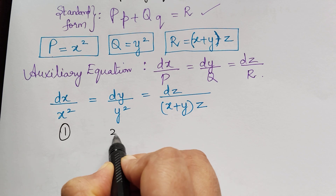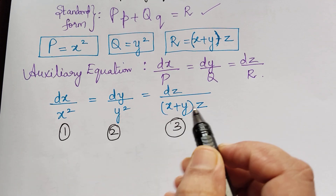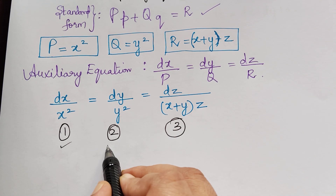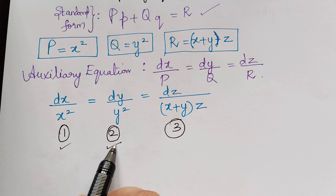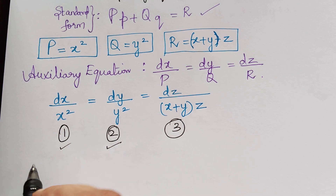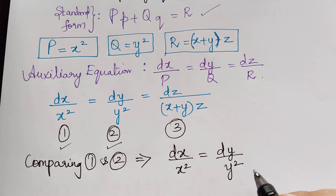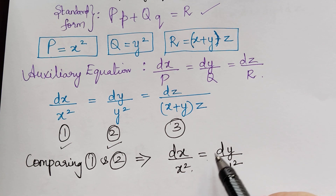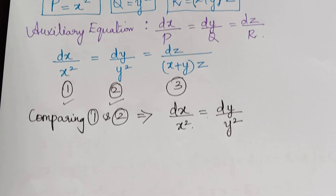We shall mark the ratios 1, 2, and 3, and first we shall compare ratios 1 and 2. We can observe that we can solve it easily by the method of grouping. So comparing 1 and 2, we have dx by x squared is equal to dy by y squared.